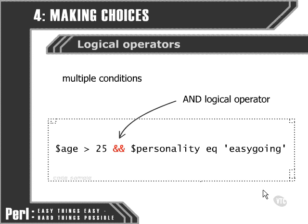We can bridge that gap by using a logical operator. What Perl actually does when we use the AND operator is it evaluates the first condition: is the person over 25? If they are, then it goes on to evaluate the second condition. Only if both of those conditions evaluate true does the overall multiple condition resolve to a true value. If the age is less than or equal to 25, then this side of the condition is false, and Perl won't even bother to evaluate the other side, because it knows it needs both sides to get a true response for the entire condition. So if the first half is false, it's going to ignore the rest.